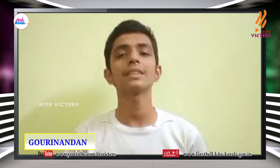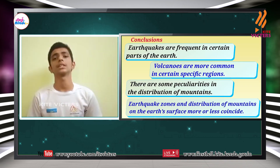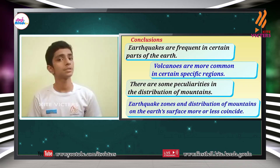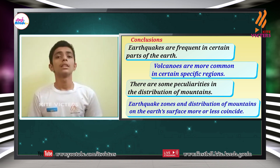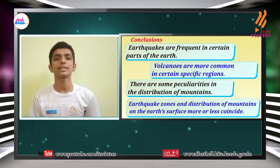Hi all! I am Gauri Nandan. Now let's recall the things that we have learned in our previous classes from the chapter The Signature of Time. We learned that earthquakes are frequent in certain parts of the earth, volcanoes are more common in certain specific regions, and there are some peculiarities in the distribution of mountains. The earthquake zones and the distribution of mountains on the earth's surface more or less coincide.